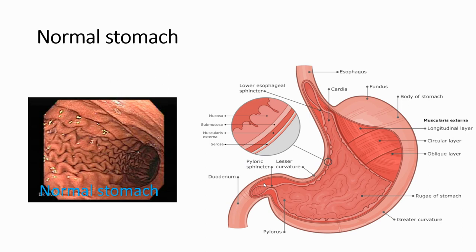This is the normal anatomy as seen through a fibroscope. We can see the normal lining of the mucosa in the lumen of the stomach, which looks like a curving linear appearance. The normal wall of the stomach is composed of the mucosal layer, submucosa, muscularis externa, and serosa.